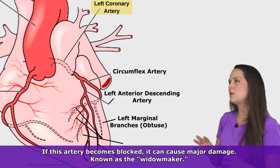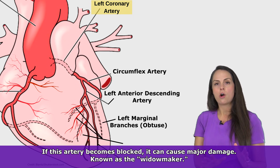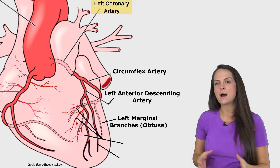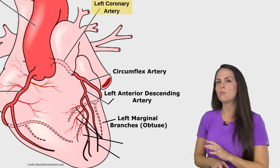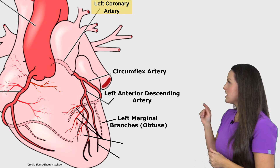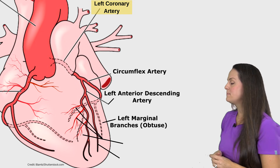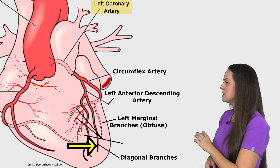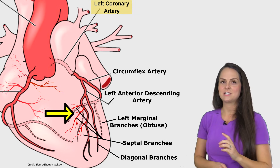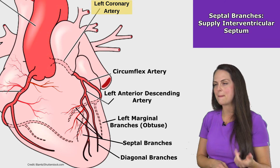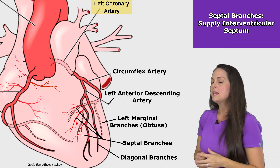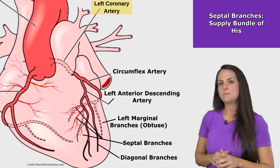A big blockage in the LAD that completely stops blood flow can damage the heart muscle to the point where it no longer works properly, because this artery supplies the left ventricle — which plays a huge role in pumping oxygenated blood up through the aorta throughout the body. The LAD also has its own smaller branches: the diagonal branches, which come off at a diagonal angle and help supply the left ventricle, and the septal branches, which mainly supply the interventricular septum and also the bundle of His — another part of the electrical conduction system.